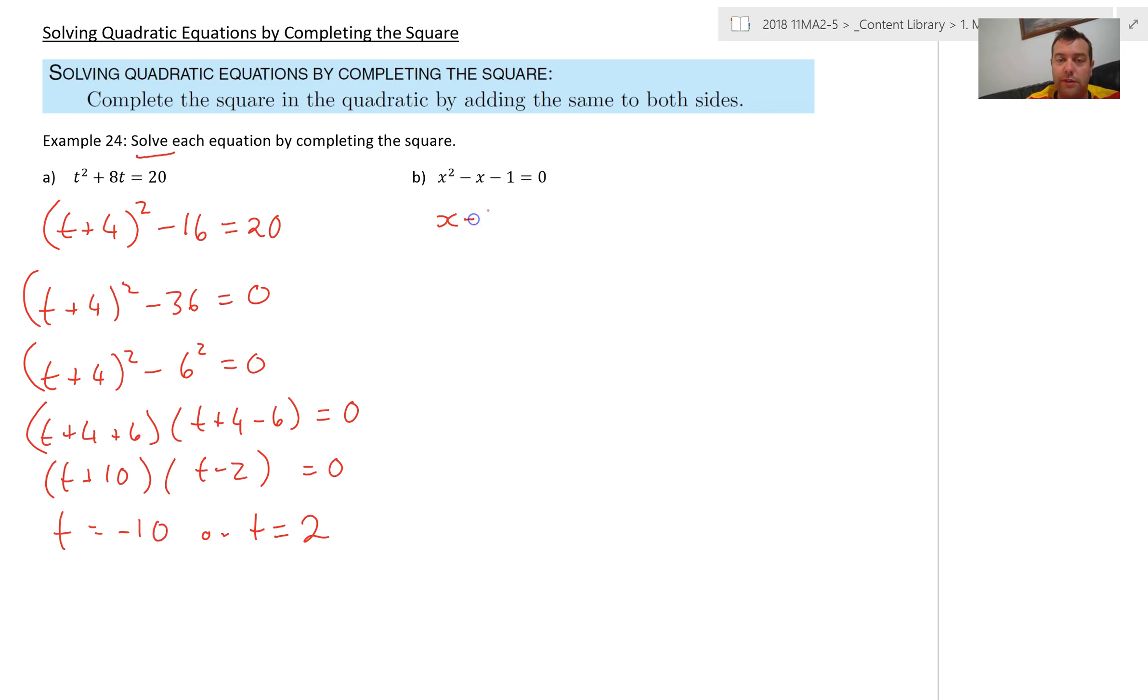What I'm going to do here, this is the same as x half this, minus a half. X minus a half all squared. Now that would introduce a quarter, so I need to take a quarter away. Already got a minus 1 there, equals 0. So I've got x minus a half all squared. I'm going to send these over the other side or add them to both sides, equals 5 over 4.